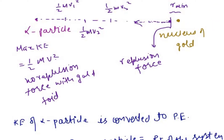Q1 is Z1 times e, where Z1 is the atomic number of the first charged particle. Q2 is Z2 times e, where Z2 is the atomic number of the second particle and e is the charge on the proton, which equals 1.67 × 10⁻¹⁹ coulombs.